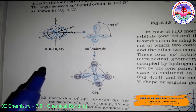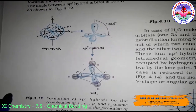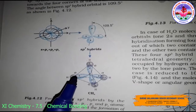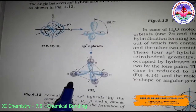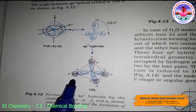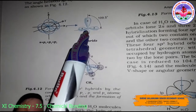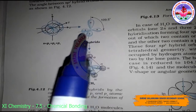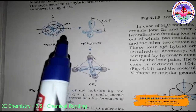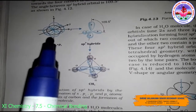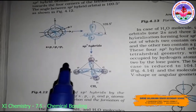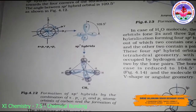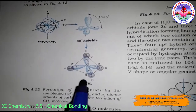Each sp3 hybrid orbital has 25% s character and 75% p character. The four sp3 hybrid orbitals are directed towards the four corners of a tetrahedron. The angle between the sp3 hybrid orbitals is 109.5 degrees. This is the formation of sp3 hybridization by combination of s, px, py, and pz atomic orbitals of carbon, resulting in the CH4 (methane) molecule.